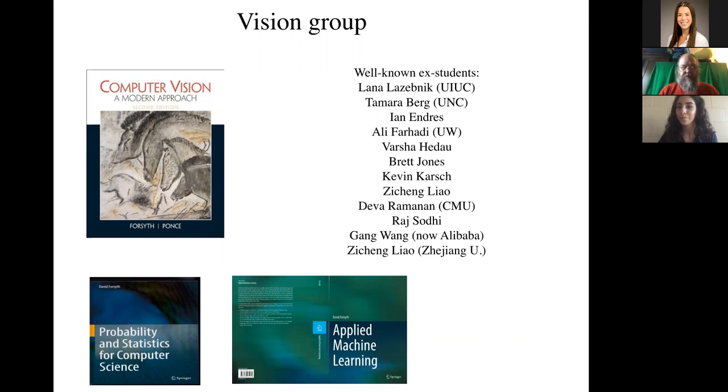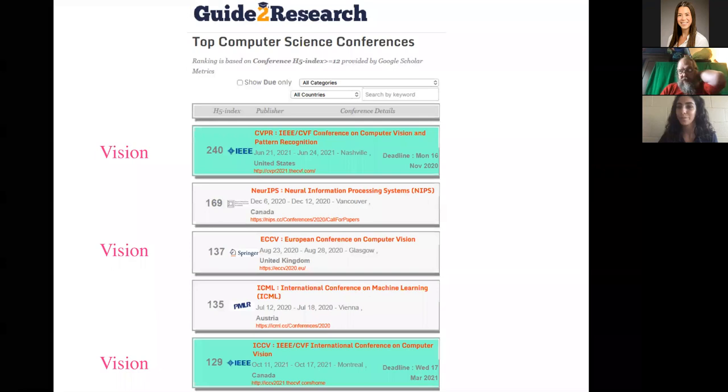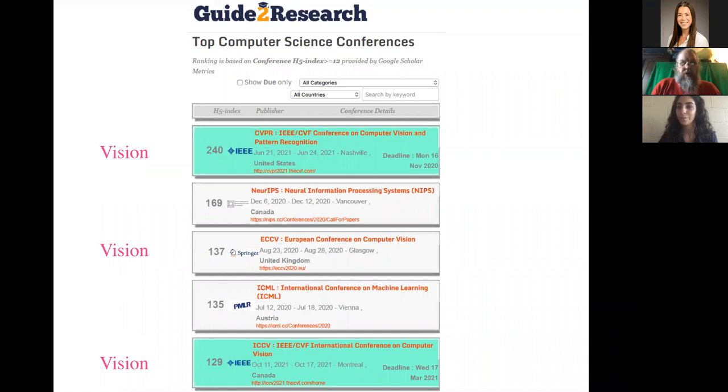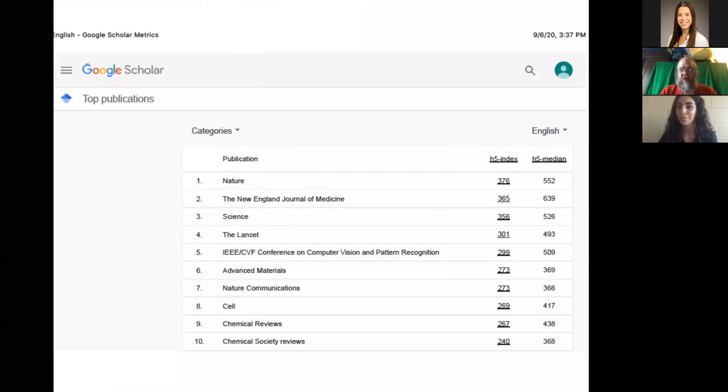Okay, vision has been growing like topsy. It's flourishing. So if you look online for a list of the top computer science conferences, which is ranking on conference H index, which is sort of a weird thing, but whatever. The top one by a long way is CVPR, which is a computer vision conference. The third is ECCV, which is a computer vision conference. And the fifth is ICCV, which is also a computer vision conference. Now, this website very often puts the conferences in the wrong places. And citation is a very odd way to rank conferences anyhow, but vision really is flourishing.